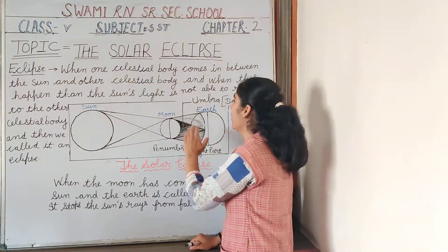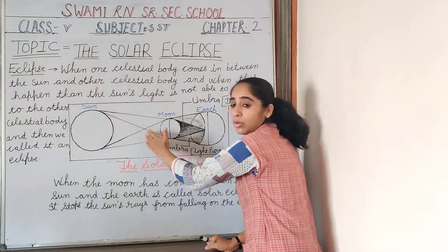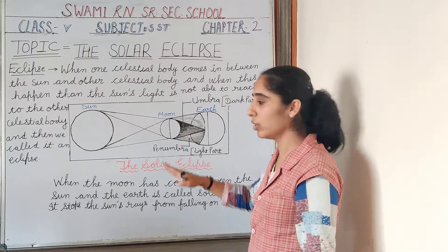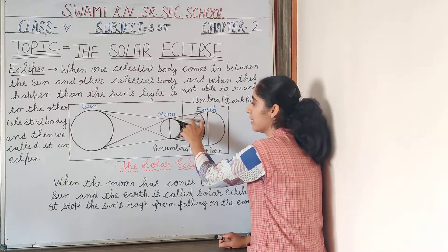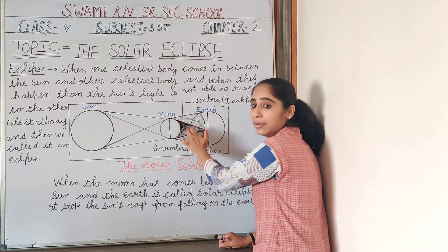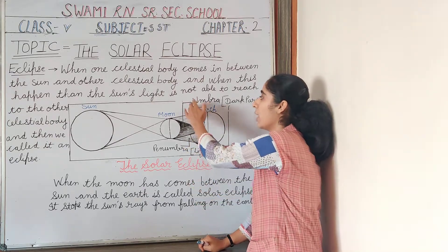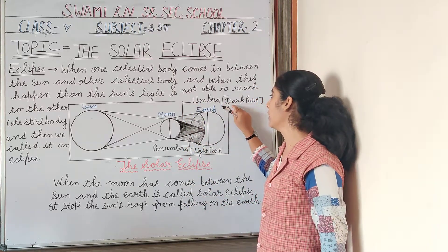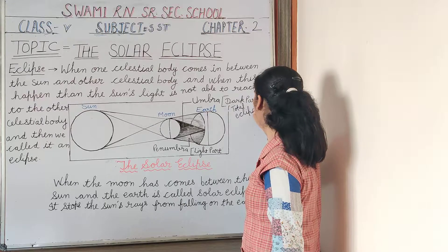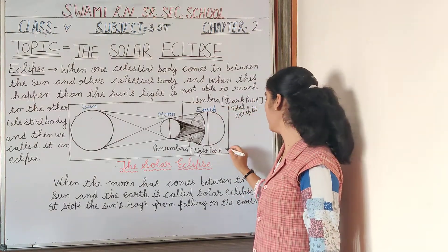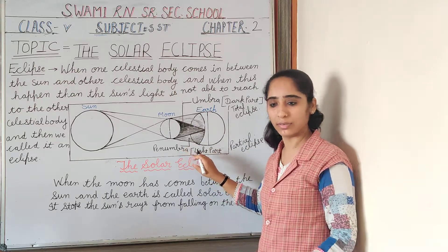The earth revolves around the sun and the moon revolves around the earth. As a result, the moon's shadow cannot cover the entire earth's surface — it covers only a small portion. This light part of the earth's surface is called the penumbra and the dark part is called the umbra. Total eclipse happens on the umbra part and partial eclipse happens on the penumbra part.